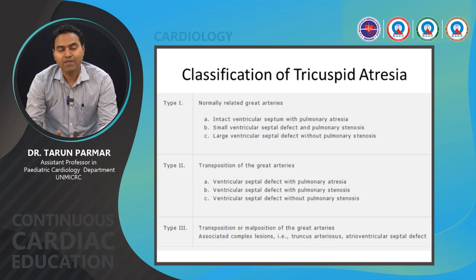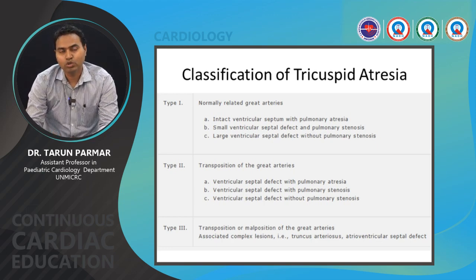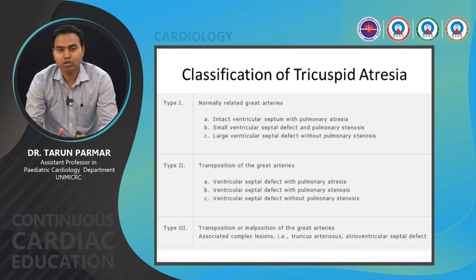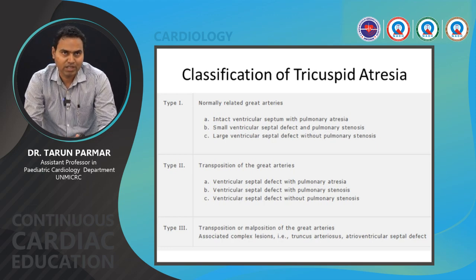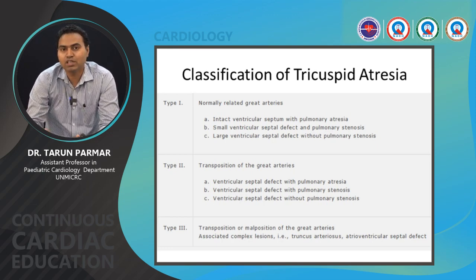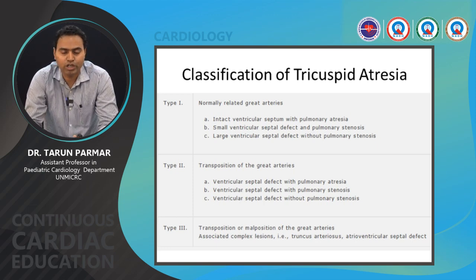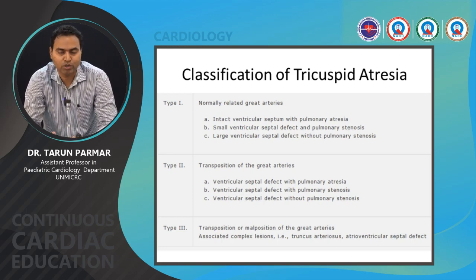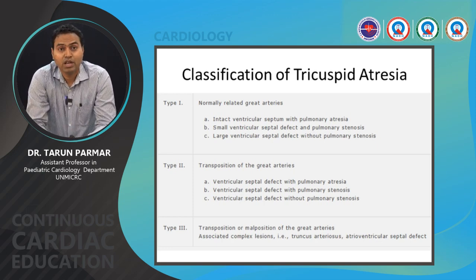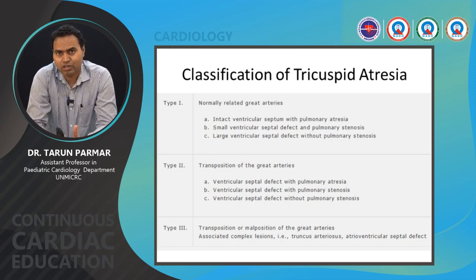Types 1 and 2 are classified according to the position of the great vessels: Type 1 has normally related great arteries and Type 2 has transposition of the great arteries. Each is then sub-classified based on whether there is pulmonary atresia, pulmonary stenosis, or no pulmonary stenosis. Type 3 involves malposition of the great arteries and associated complex lesions such as truncus arteriosus or AVSD.